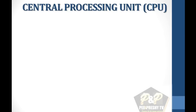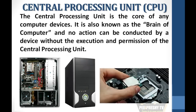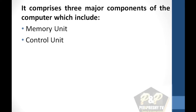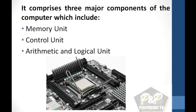The central processing unit as a component. The central processing unit is the core of any computer device. It is also known as the brain of the computer, and no action can be conducted by a device without the execution and permission of the central processing unit. It comprises three major components which include: 1. Memory unit, 2. Control unit, 3. Arithmetic and logical unit.